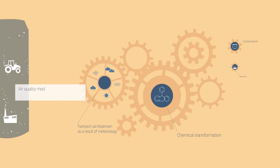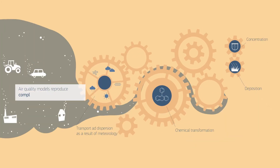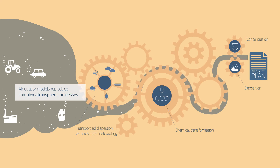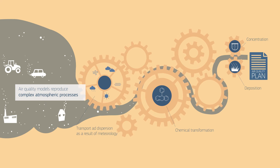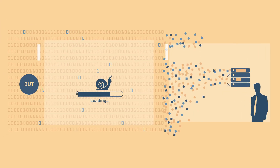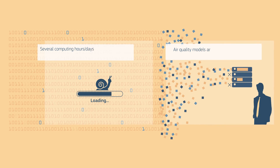Air quality models reproduce complex atmospheric processes and are very useful for supporting air quality plans, but due to their complexity, they're not always easily available to local policymakers.